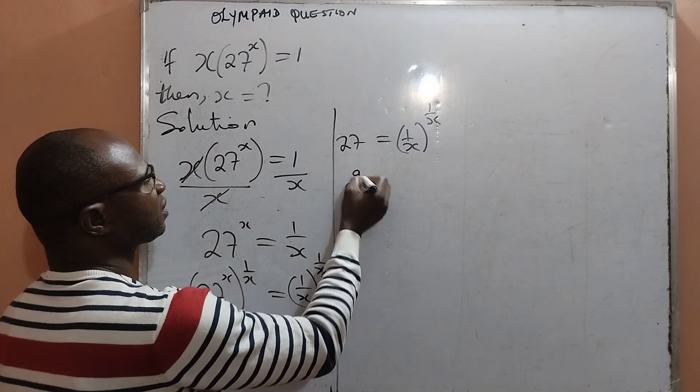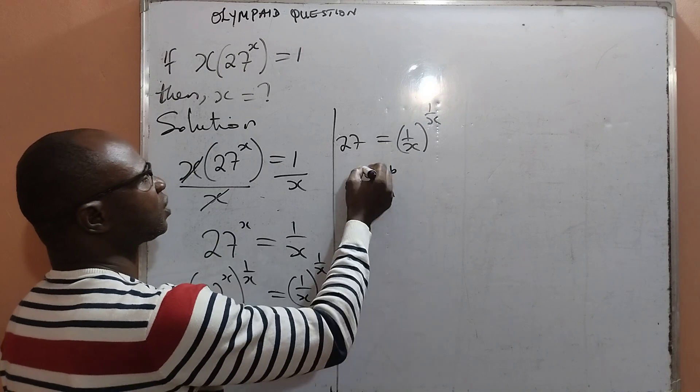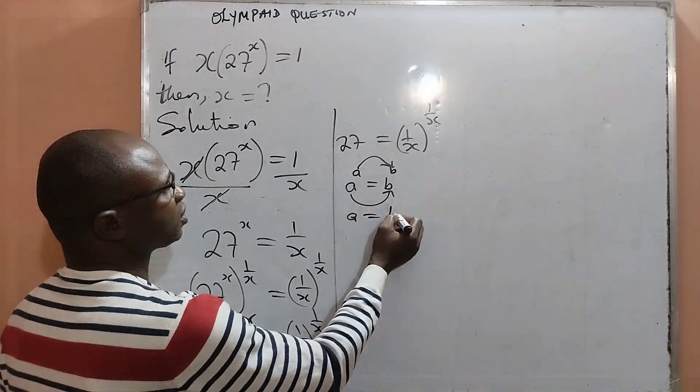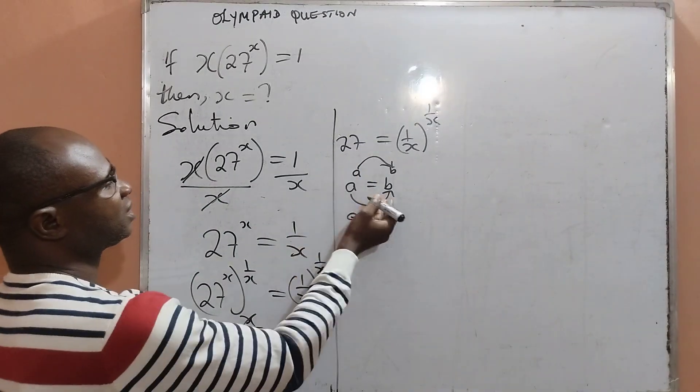But we know that a to the power of a equal to b to the power of b implies that a is equal to b and b is equal to a. That is, a is equal to b. So by this, I can express this 27 in this form.